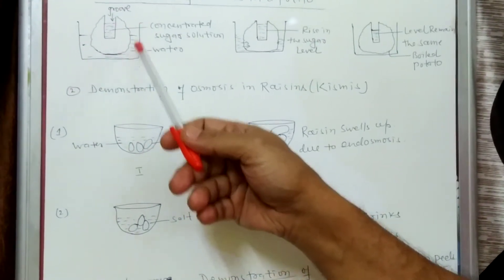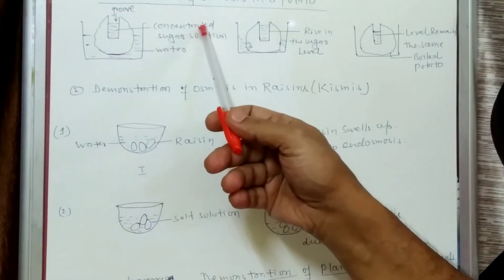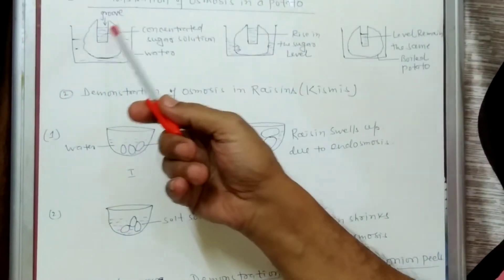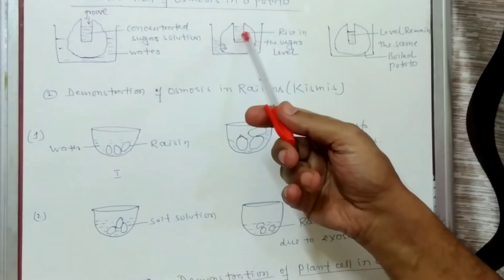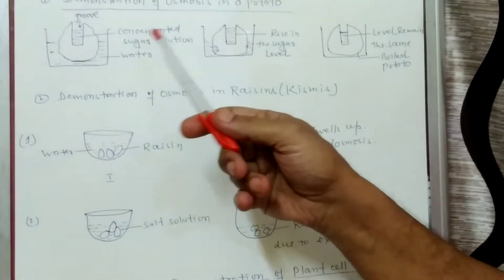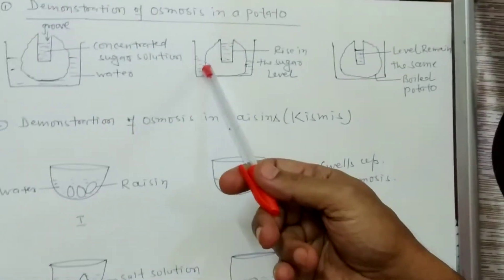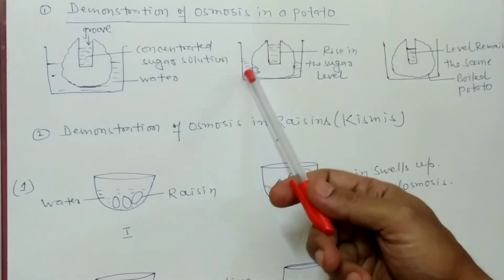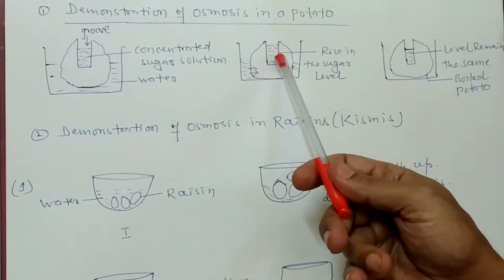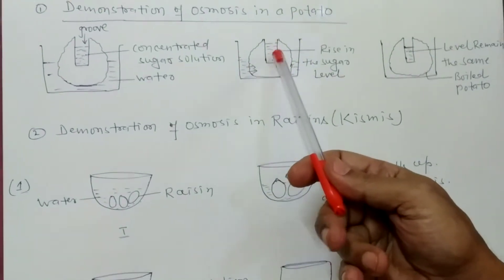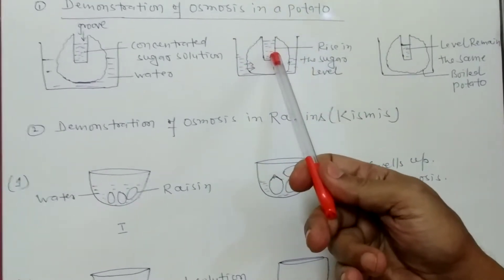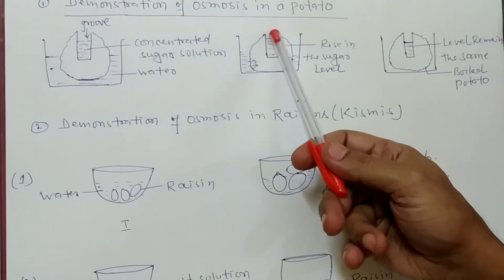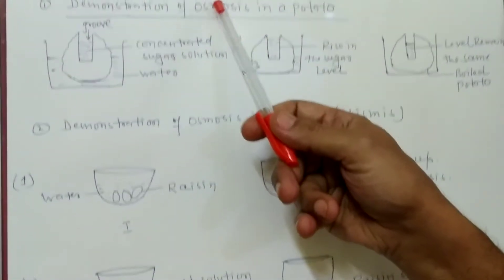So in the tray we have taken water, and inside the groove of the potato we have taken the concentrated sugar solution. Here you find, coming to the next diagram, that the level of this sugar solution rises because water will move from the tray to inside the potato — from higher concentration of water to lower concentration of water, that means from the dilute to the concentrated. So the level of sugar solution will rise in the potato groove, showing the process of osmosis.